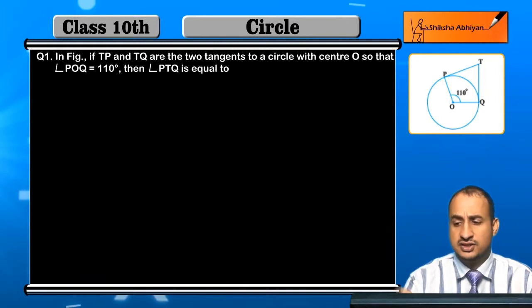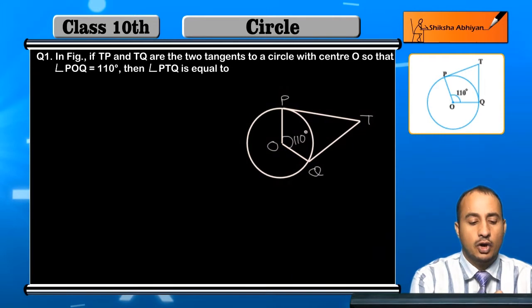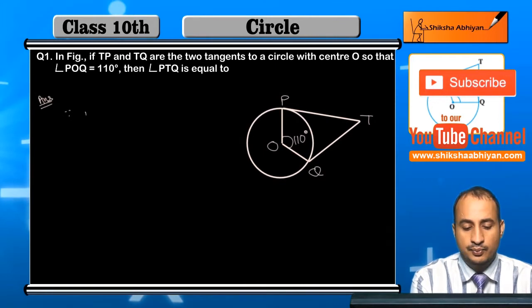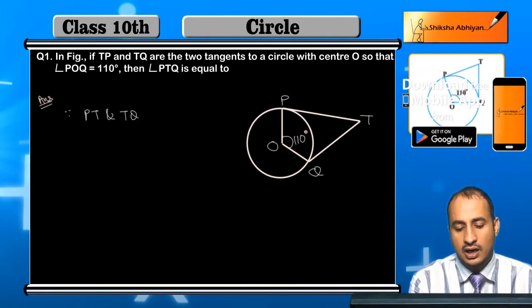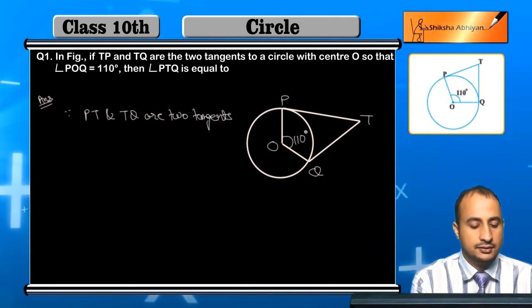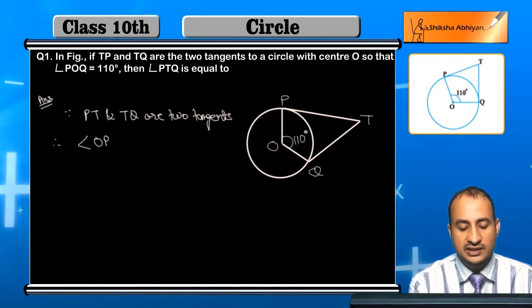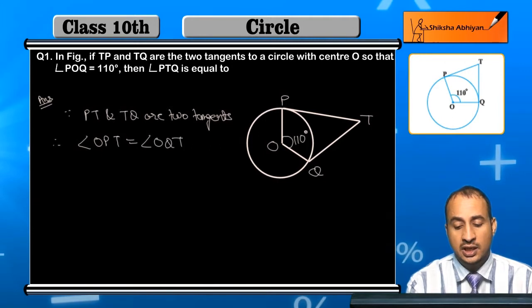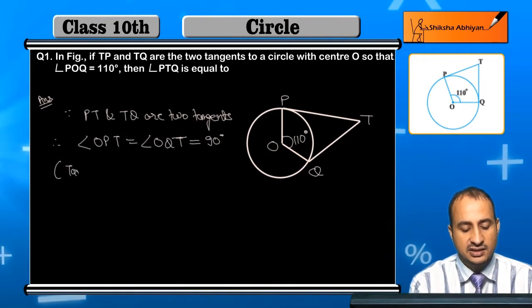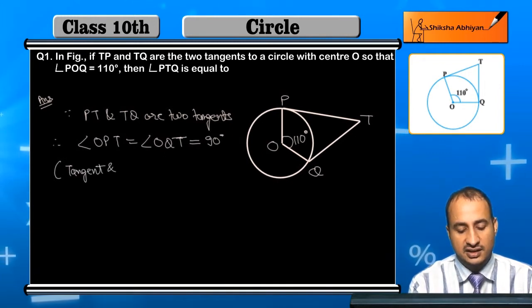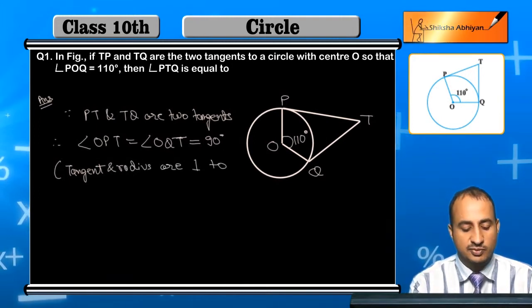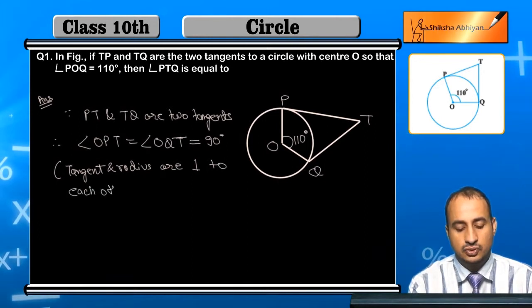As you can see, I have already drawn the figure. Now student, since PT and TQ are two tangents, therefore angle OPT is equal to angle OQT. These two angles are both 90 degrees. Why? Because tangent and radius are perpendicular to each other.